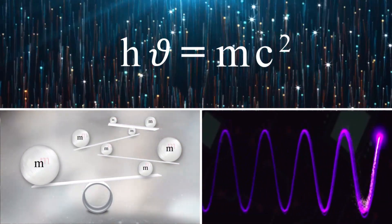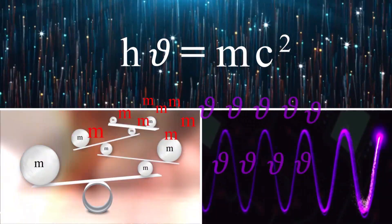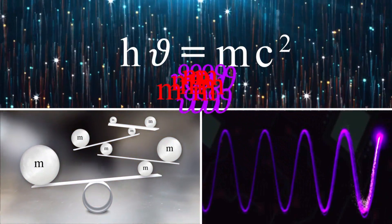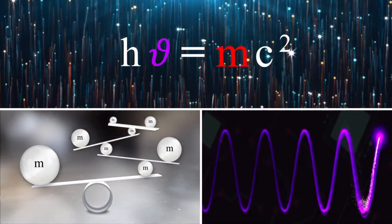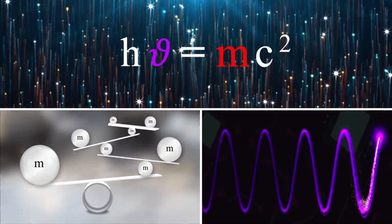In the equality of h nu equals mc squared, the variables are frequency and mass, and these variables are completely heterogeneous.